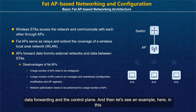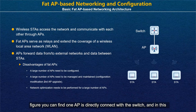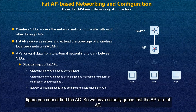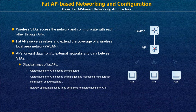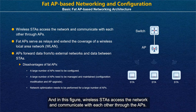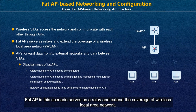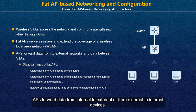Let's see an example. In this figure, you can find one AP is directly connected with the switch, and there is no AC in the figure, so we can guess that this AP is a FATAP. Wireless STAs access the network and communicate with each other through the AP. The FATAP in this scenario serves as a relay and extends the coverage of the wireless LAN. APs forward data from internal to external or from external to internal devices.